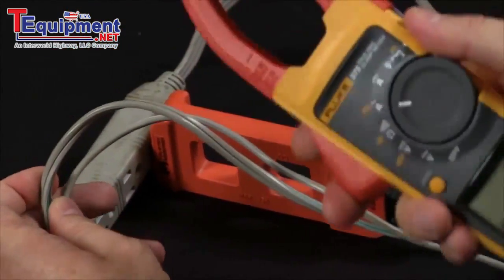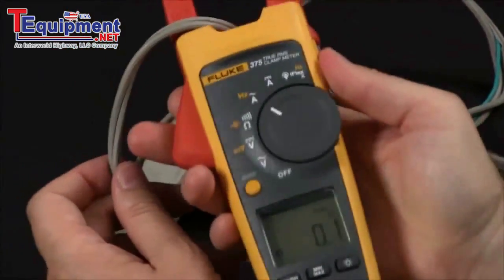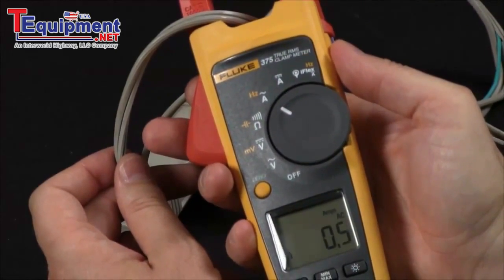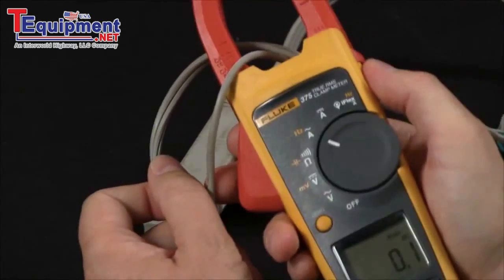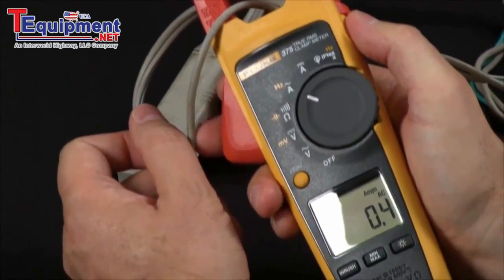However, if I split the cords, it doesn't matter which side I measure. I'm now measuring about half an amp, or if I measure on the other conductor, we'll have the same result—about a half an amp.